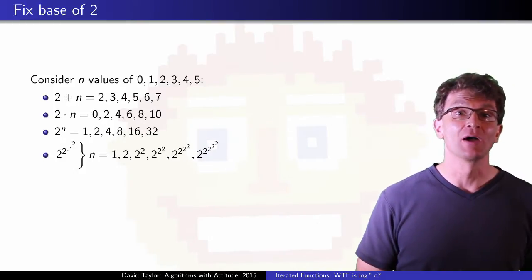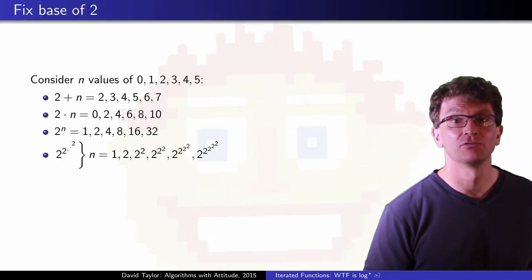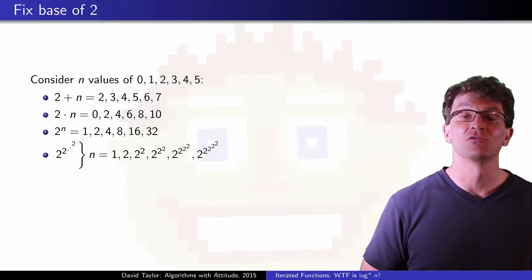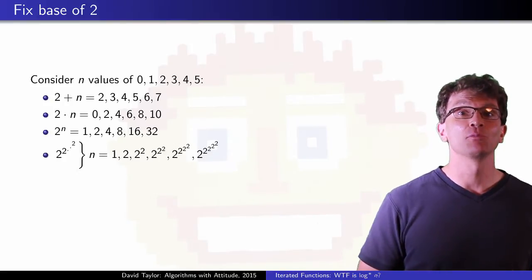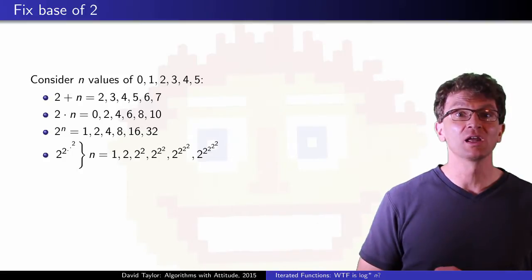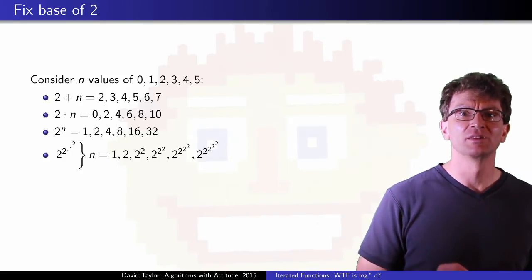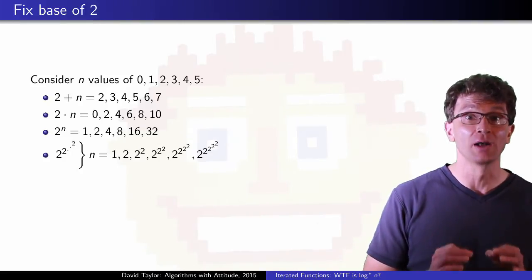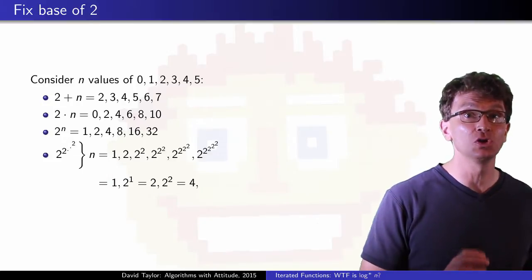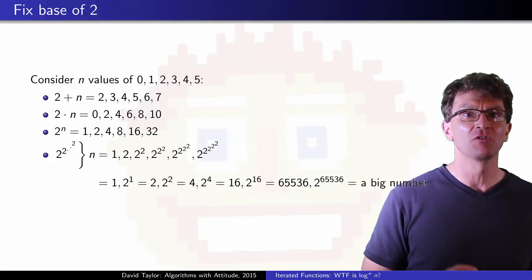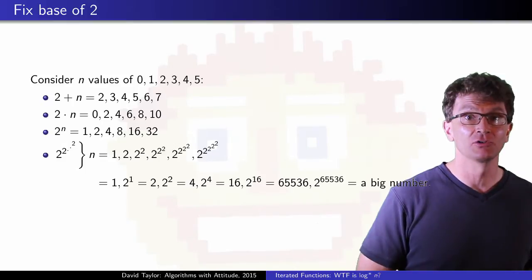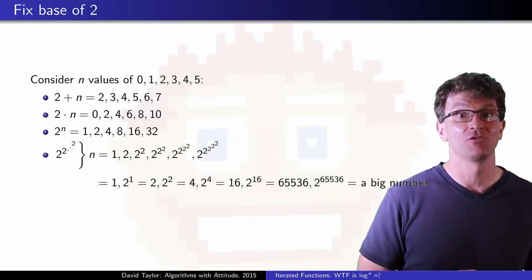So let's look at some particular values for these functions, when we use a base of 2, and consider n values of up to 5. By the time we get to exponentiation, we think of a function as growing quickly, but the tower of 2's grows much faster. A tower of 5 2's is thought to be way bigger than the number of atoms in the observable universe, so that's a really fast growing function.